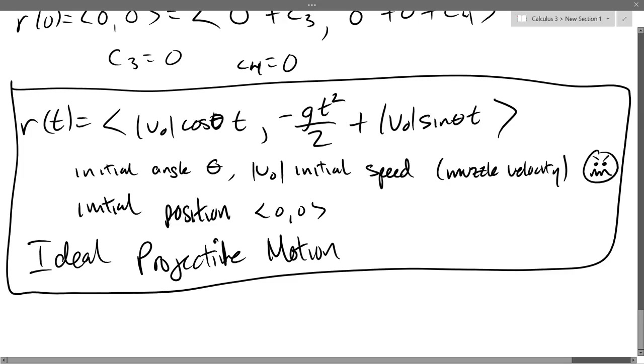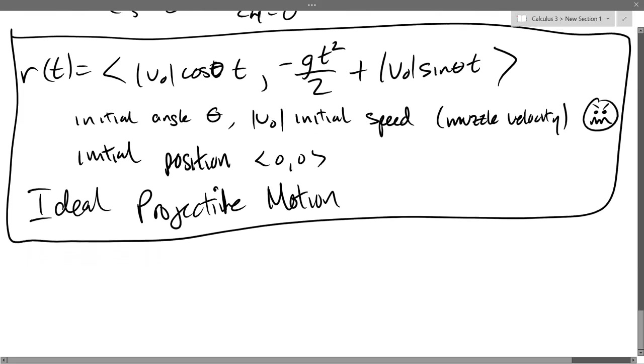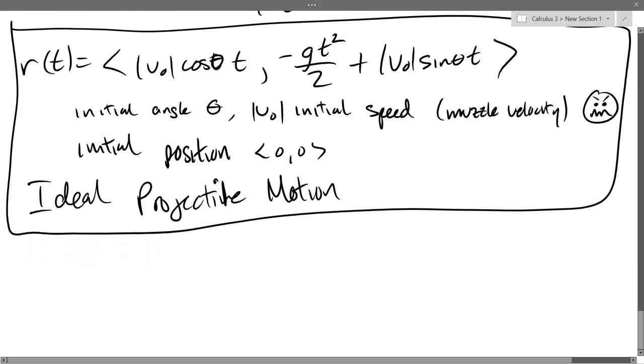So that negative g over 2t squared, that's where our parabola becomes sad. That's the sad parabola part right there. All right, you've probably played Angry Birds or seen somebody play it. That's ideal projectile motion. At its finest. At its finest. Yes, absolutely.